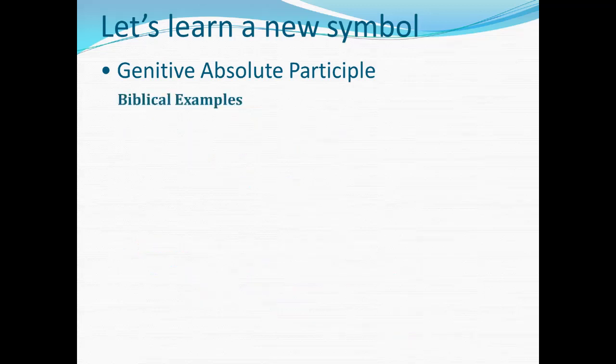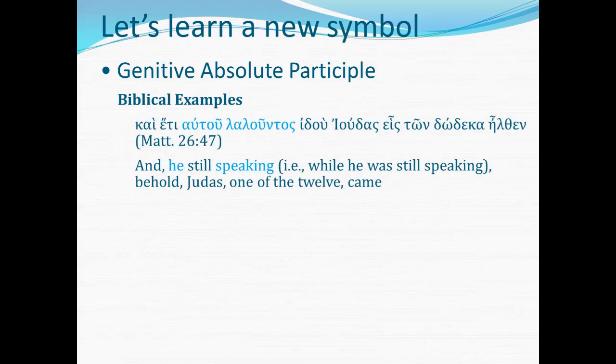Now let's look at biblical examples. Matthew 26:47: 'And he still speaking — while he was still speaking — behold, Judas, one of the twelve, came.' Before I show you this diagram, let's think through it. For the main clause, you always start with your main baseline: the subject and verb, Judas came — Ioudas ēlthen. Now there are some introductory words: there's a conjunction, kai, at the beginning, and an interjection, behold. In part four of this series we covered introductory conjunctions and interjections, so those will need to appear at the left end of the baseline.